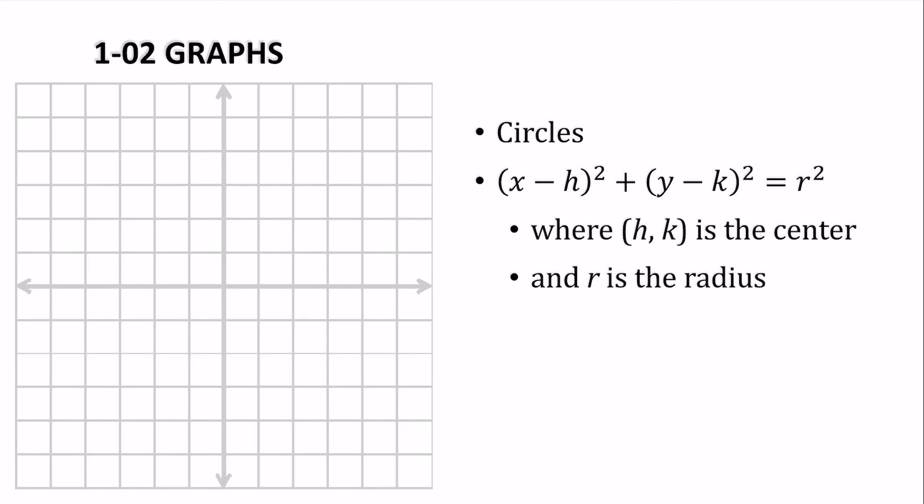Alright, for circles, we have this equation, where h-k is the center and r is the radius. This comes from the Pythagorean theorem. You have a circle, you have a point. That distance is r. The center is h-k.